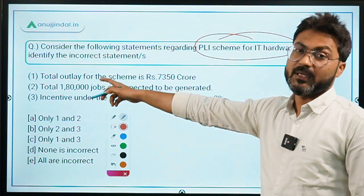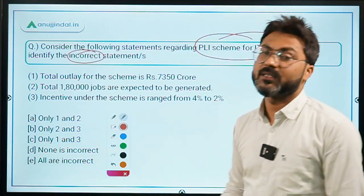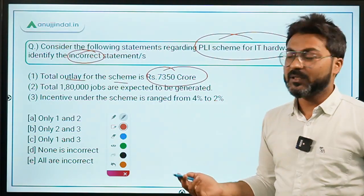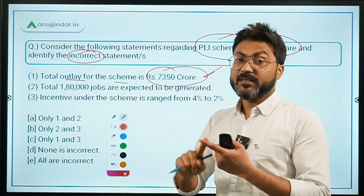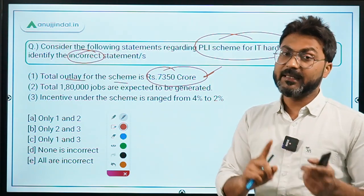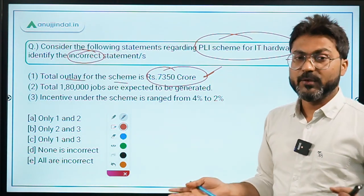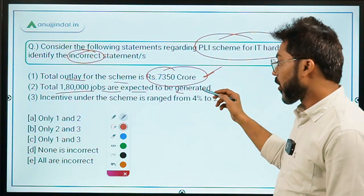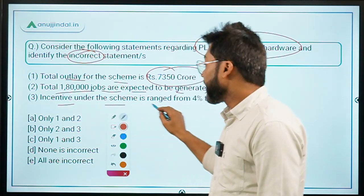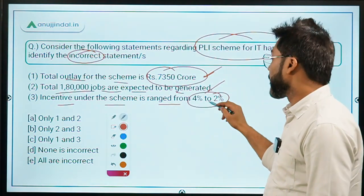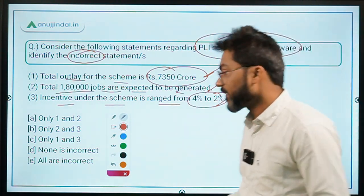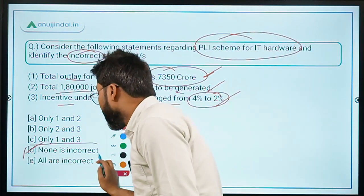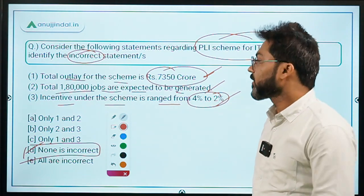For Question 2 on the PLI scheme for IT hardware, all statements are evaluated: total outlay is ₹7,350 crores — correct; ₹7,325 crores is for incentives and ₹25 crores for administrative charges — correct; 1,80,000 jobs expected — correct; incentive ranges from 4% to 2% — correct. All statements are correct, so the answer is option D — none is incorrect.